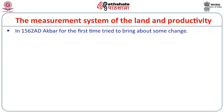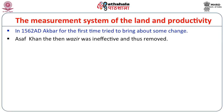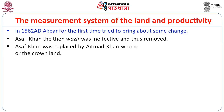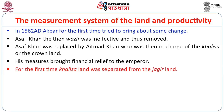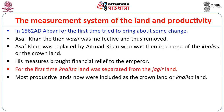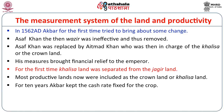In 1562, Akbar was for the first time trying to bring some change. Asaf Khan was then the wazir, who was ineffective and therefore immediately removed from the affair. Asaf Khan was replaced by someone called Itimad Khan, who was in charge of the Khalisa or crown land. His measures brought financial relief to the emperor. For the first time, Khalisa land was separated from the Jagir land. Most productive lands were now included as crown land. For 10 years, Akbar kept the cash rate fixed for the crop so that the revenue earned by the state remained fixed.